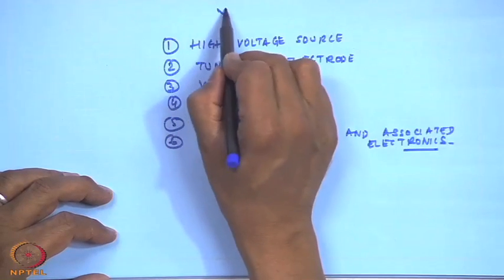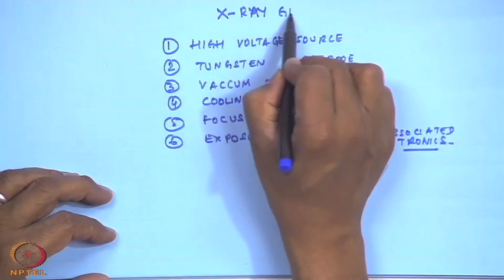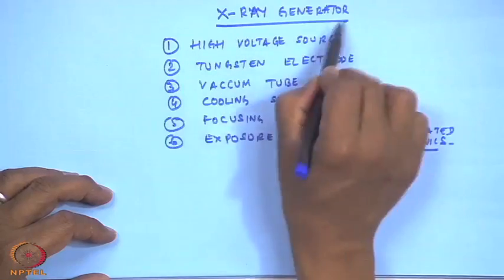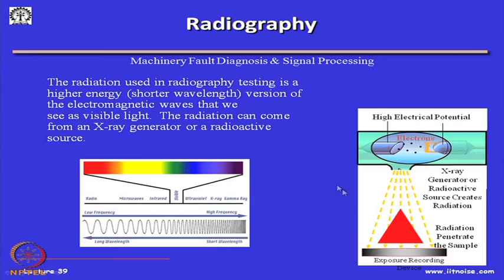An x-ray generator needs all these components. Finally, we have a material on which the x-rays are exposed, and we get an exposure recording device — could be a film or a digital image. The component whose x-ray has to be done is brought to a facility where x-ray generators are available, but there are also portable x-ray generators for in-situ x-rays. These are not very convenient to take to the field, but for NDT — for example, a boiler tube with scale formations — an x-ray can be exposed to it.